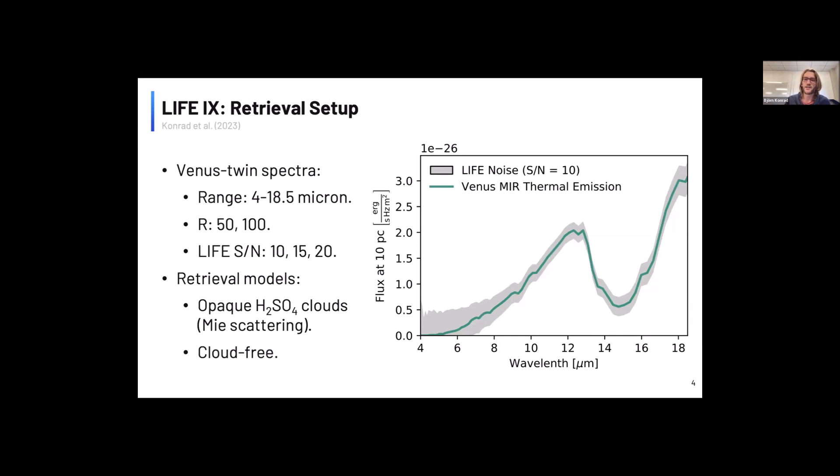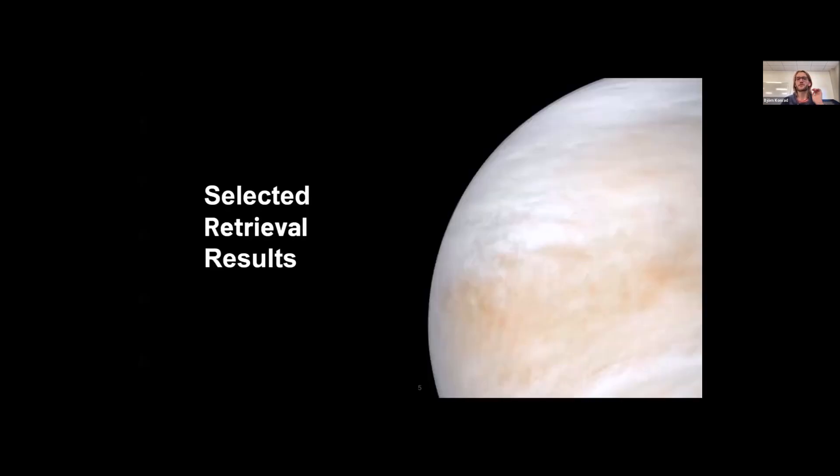And the other model we tried is a wrong model, and this wrong model is basically if we assume that there are no clouds in this atmosphere.